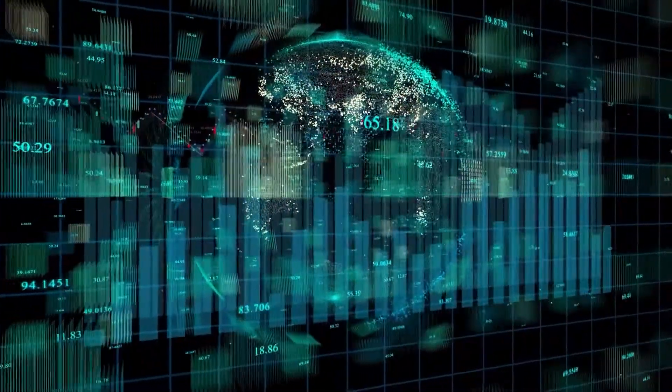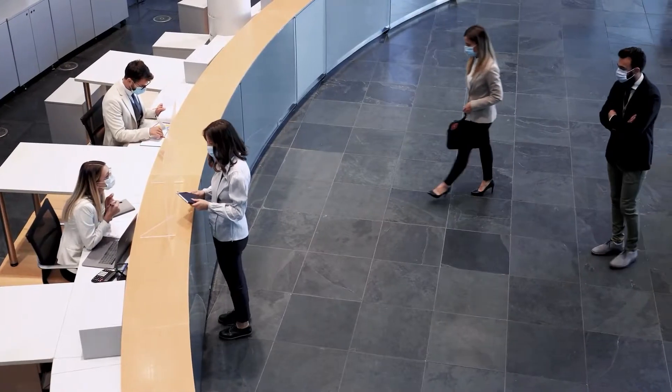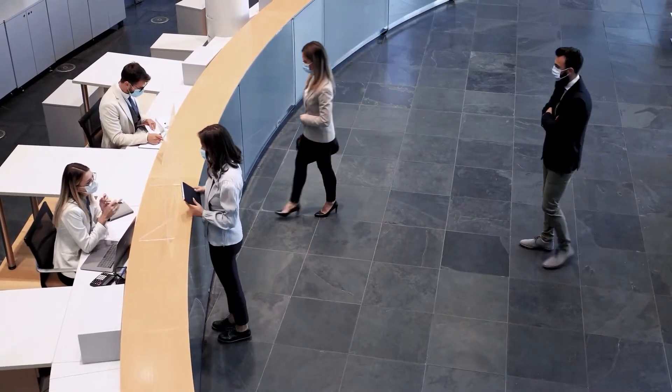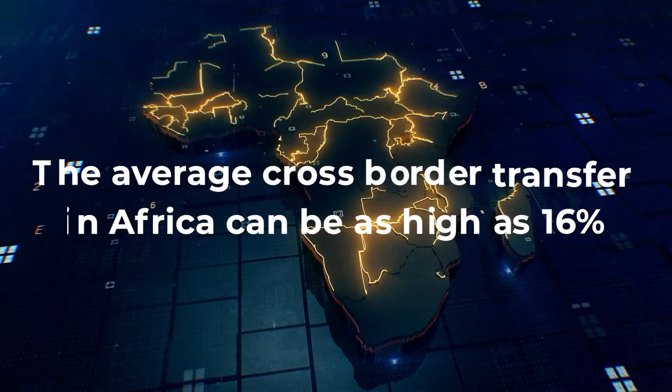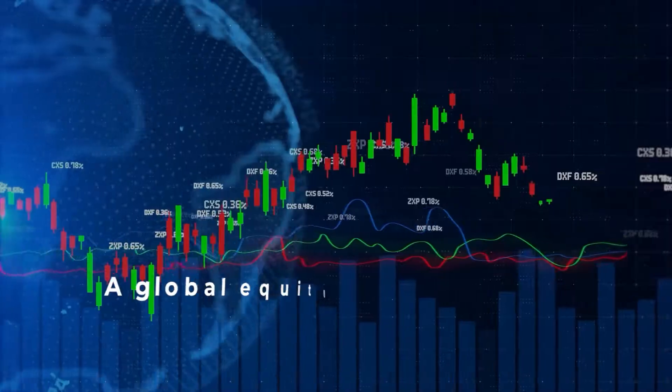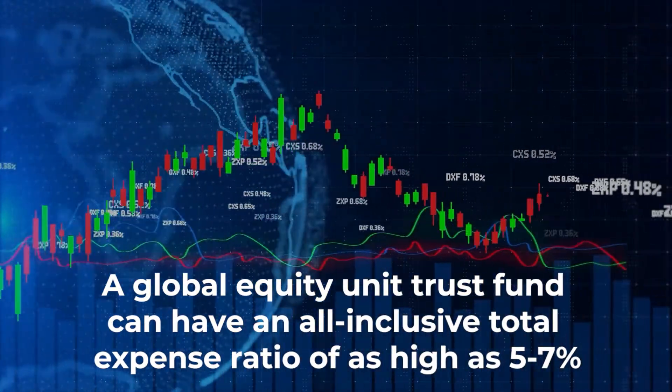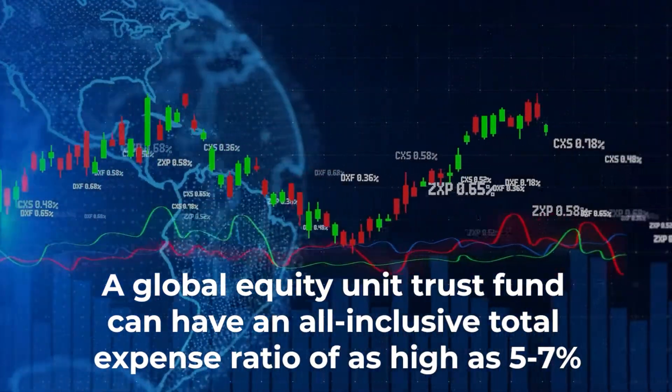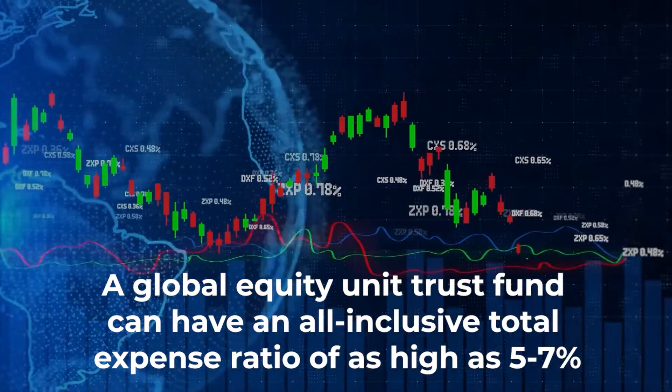It is a well-known fact that capital markets and the traditional banking system are inefficient and categorized by too high fees and too many middlemen. The average cross-border transfer in Africa can be as high as 16%, and a global equity unit trust fund can have an all-inclusive total expense ratio of as high as 5 to 7%.